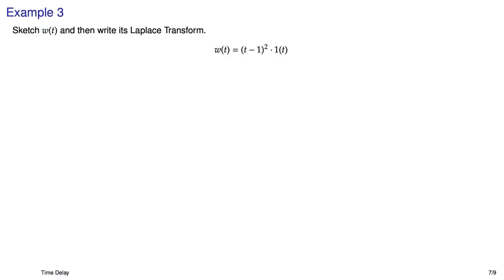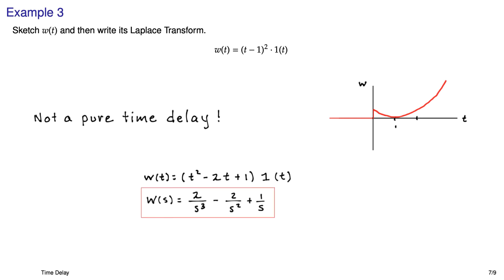And here we are in example three. Now you look at this function and it doesn't look like a time-delayed function, because every occurrence of t is not a t minus one. So it's not a pure time delay. Here's what it looks like, it's this parabolic thing again, where it is annihilated for time less than zero, because of the unit step that kicks in at time equals zero. But we can still take the Laplace transform of it. We just have to multiply out the t minus one squared, and go through the normal process of the Laplace transform. Notice there's no e to the negative s's in there, because it's not a time-delay function.